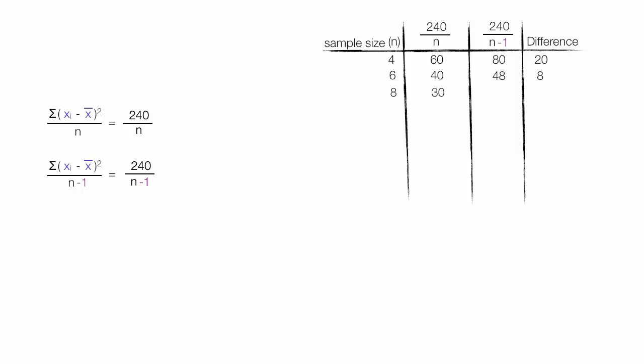As I increase my sample size, notice that the difference between the n and n-1 calculation becomes less and less. And by the time I get to 20, a sample size of 20, it's dropped to 0.6. As you can see, this n-1 adjustment makes a big difference with small sample sizes, but as the sample size goes up, the impact is less. And in fact, by the time we get to 120, the difference is only 0.01.